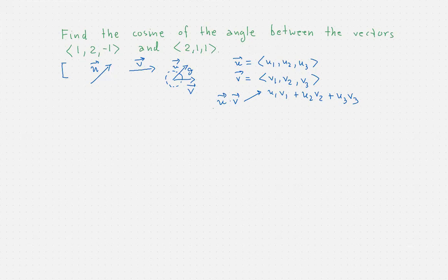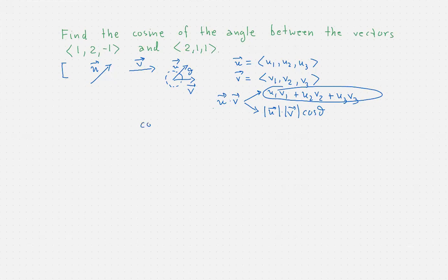The second formula is more revealing about the nature of the dot product. It's the product of the magnitudes times the cosine of the angle between them. For computations we always use the first formula, but what's interesting is that once we use it to compute the dot product, we can solve for cosine theta using the second formula. This gives us that the cosine of the angle between two vectors equals the dot product divided by the product of the magnitudes.